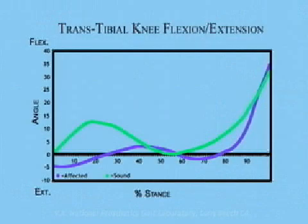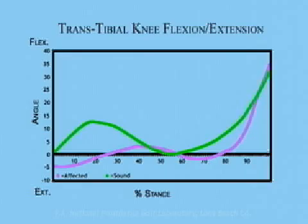The graph shows typical reduced knee flexion on the affected side, illustrated by the purple line, contrasted with near normal sound limb knee flexion, illustrated by the green line.